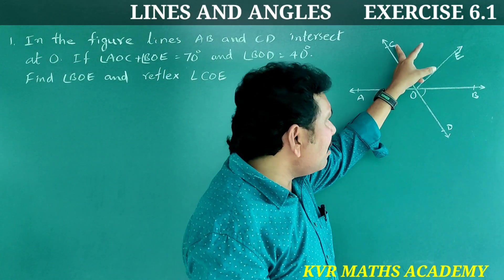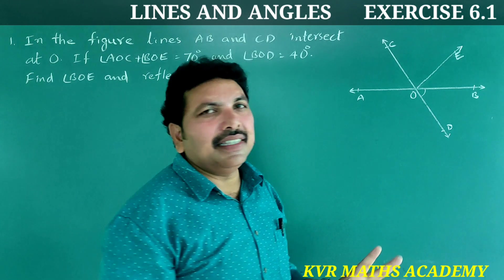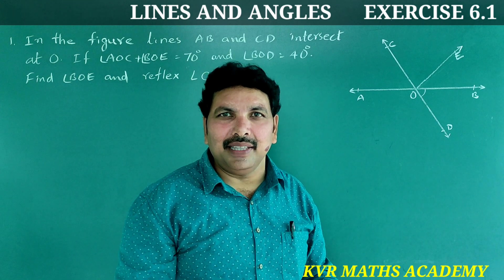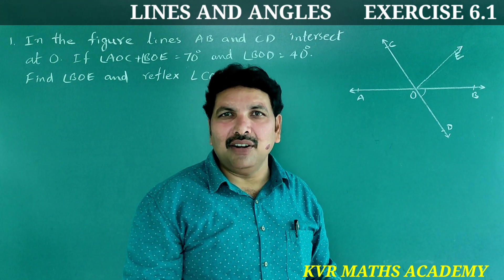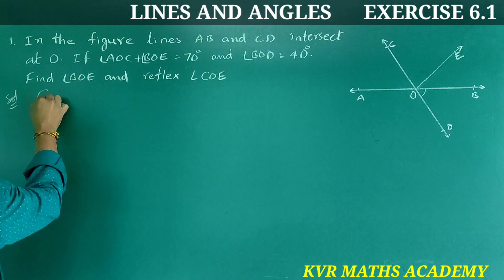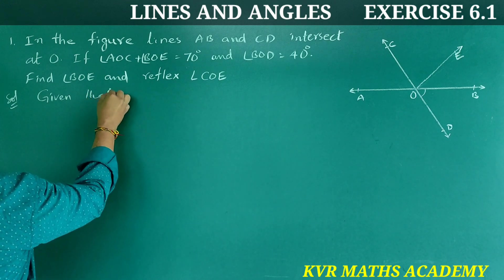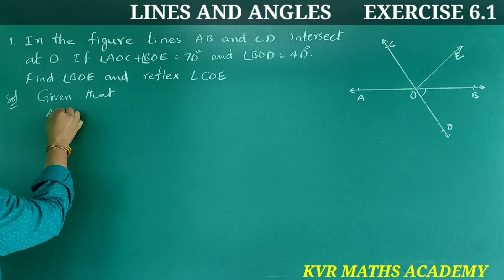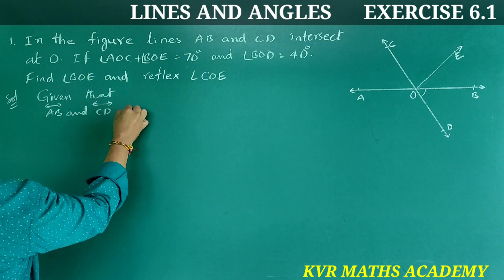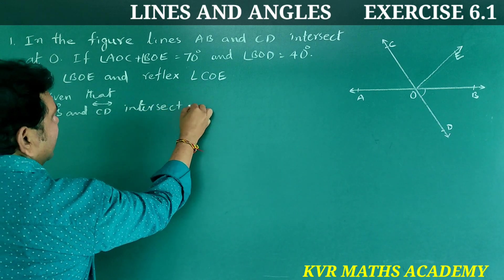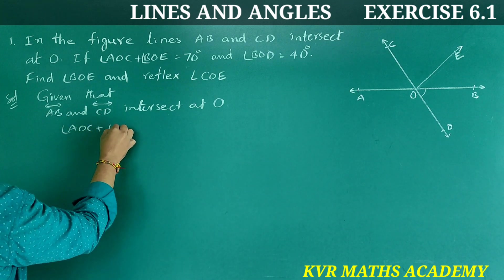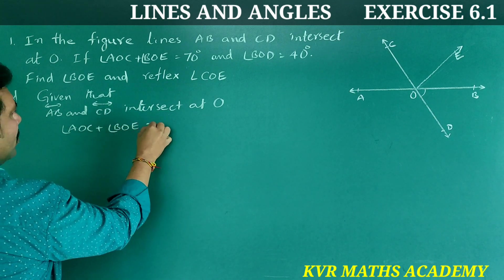We need to find angle BOE and also the reflex angle of angle COE. The reflex angle means 360 degrees minus that angle. Given: lines AB and CD intersect at O. Angle AOC plus angle BOE is equal to 70 degrees.